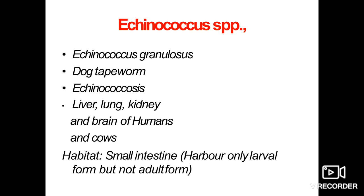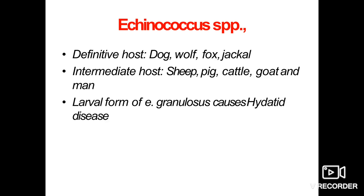The size of the adult worm ranges in length from 3 mm to 6 mm and has three different segments called proglottides. The definitive hosts for this parasite are dogs, wolves, foxes, and jackals, while the intermediate hosts are sheep, pigs, cattle, goats, and humans.